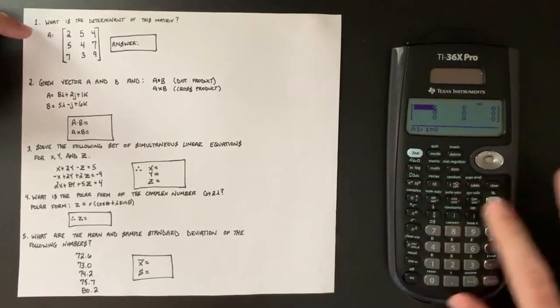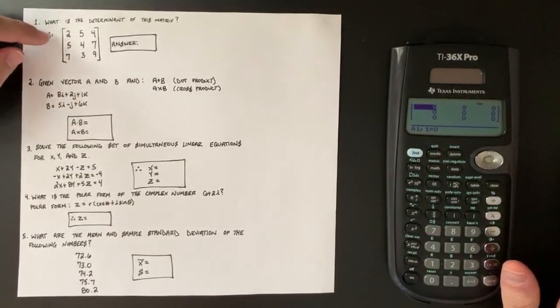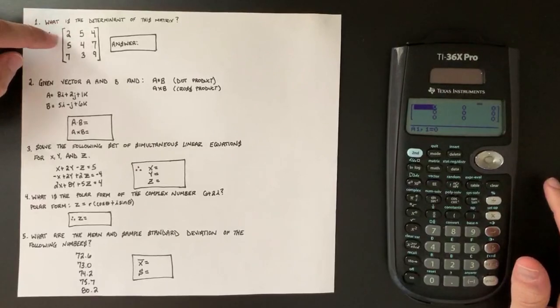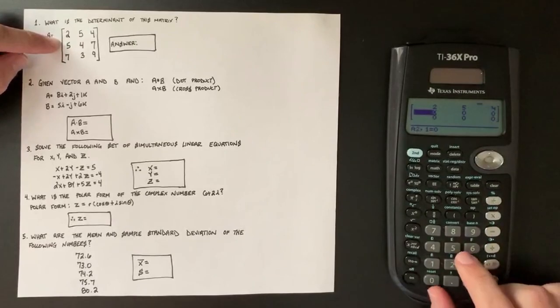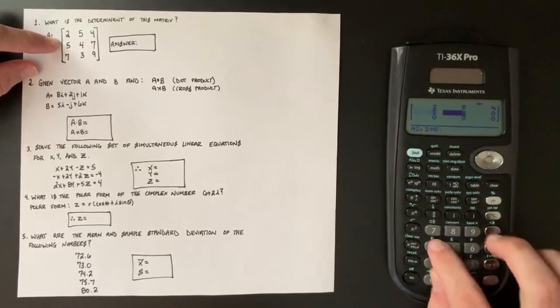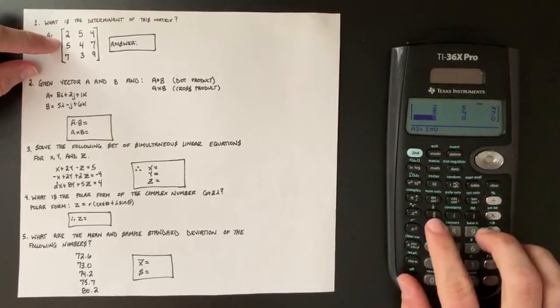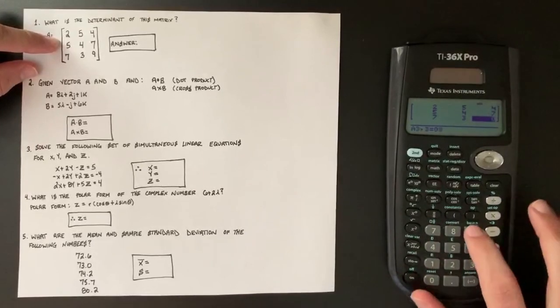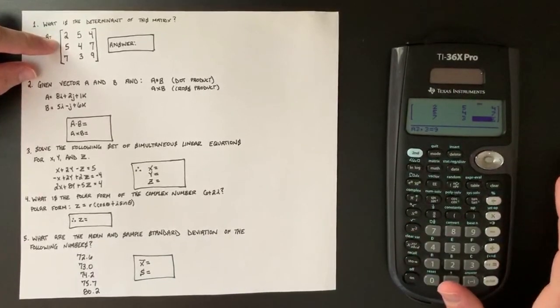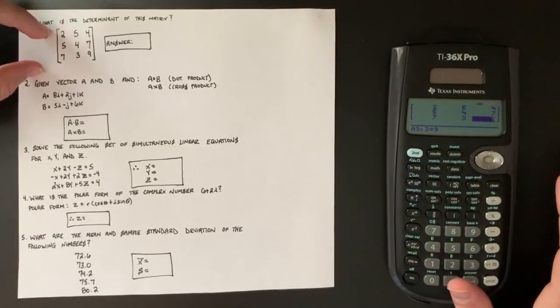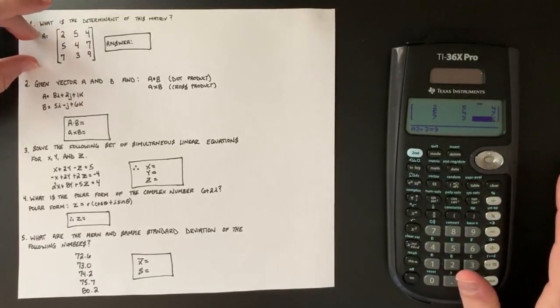So now all you have to do is input as you see directly from the question. So the first row is two, five, four, second row, five, four, seven, third row, seven, three, nine. So now we have created matrix A and it's identical to the matrix in the question.